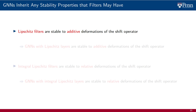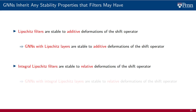For instance, given that we have proven that Lipschitz graph filters are stable to additive deformations of the shift operator, we can claim that GNNs with Lipschitz layers are stable to additive deformations of the shift operator. The GNN just inherits the stability property of the filters that make its layers. Likewise, given that we have proven that integral Lipschitz filters are stable to relative deformations of the graph, it follows that GNNs whose layers are made up of integral Lipschitz filters are stable to relative deformations of the graph too.